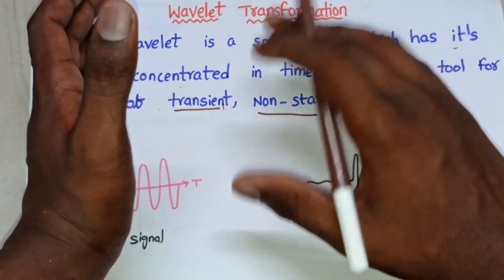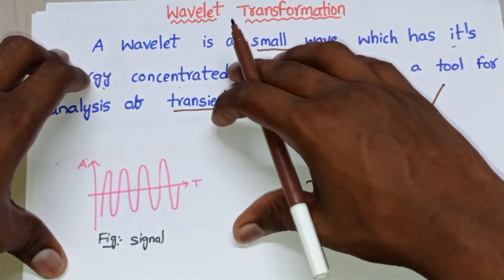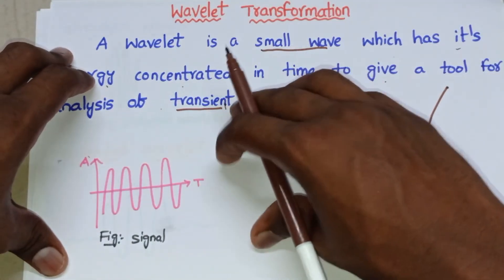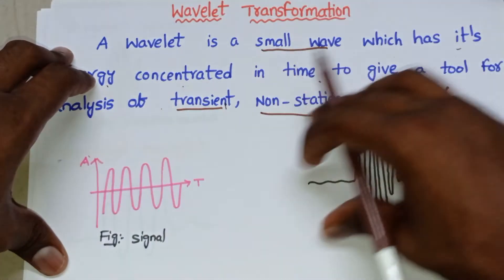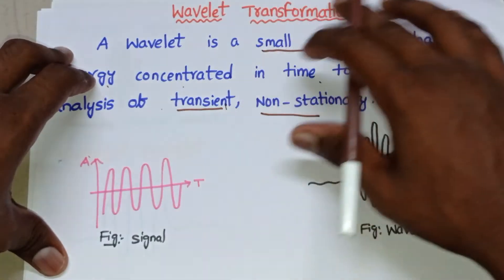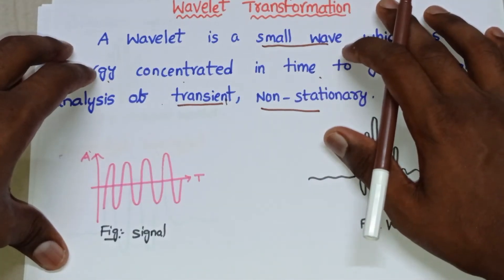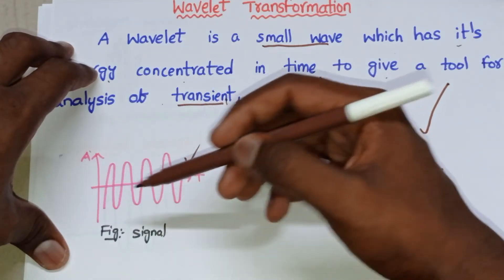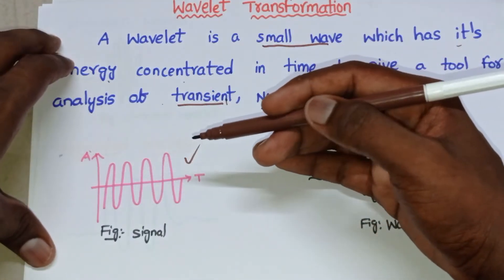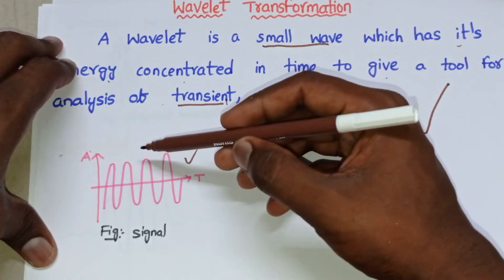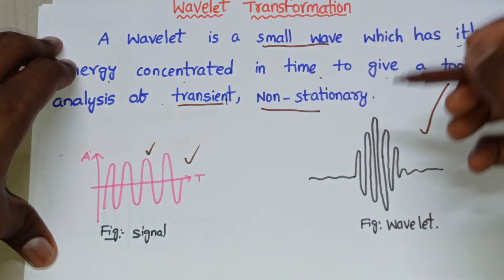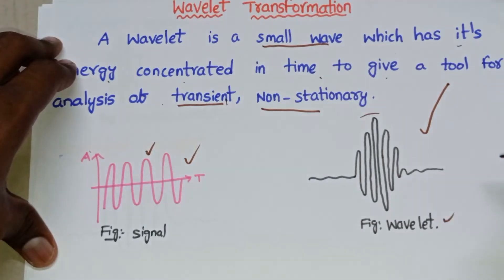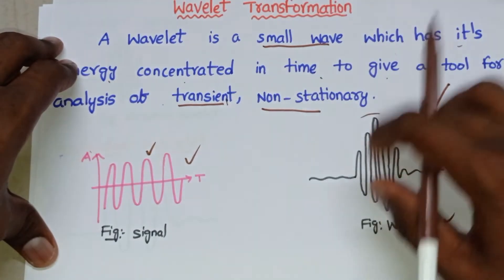Wavelet transform gives information about both time and frequency — at which particular time a certain frequency occurs, and at which particular frequency what is the time. Now, this is the normal sine wave signal. Generally we represent any signal in the standard way, but wavelet transform represents the signal as a wavelet.